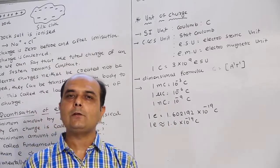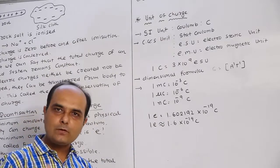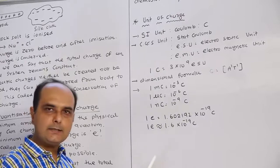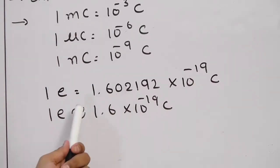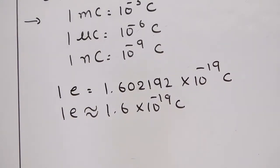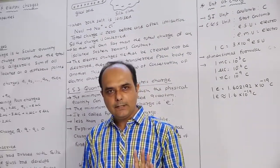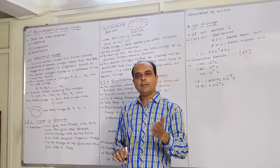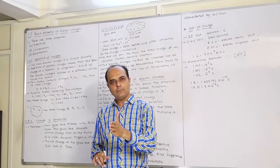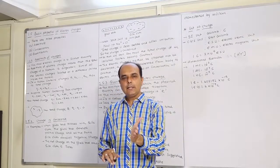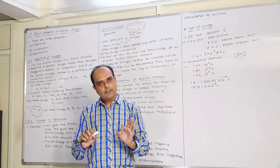The dimensional formula of electric charge is A¹T¹, where A means ampere and T means time. Smaller units of electric charge are millicolumb (10⁻³ C), microcoulomb (10⁻⁶ C), and nanocoulomb (10⁻⁹ C). The exact value of e is 1.602192 × 10⁻¹⁹ coulombs, but the approximate value 1.6 × 10⁻¹⁹ C is used in calculations. Today we completed the three properties of electric charge — additivity, conservation, and quantization — and the units of electric charge.